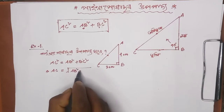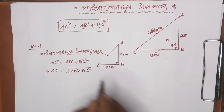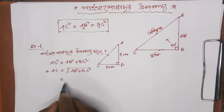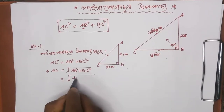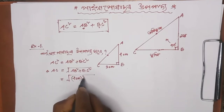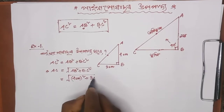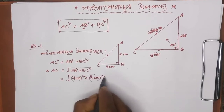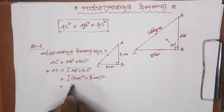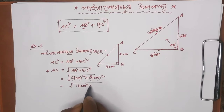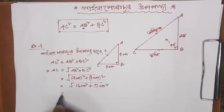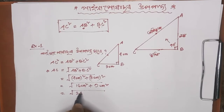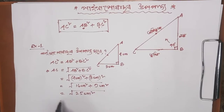AB squared plus BC squared equals AC squared. AB squared means 4 cm squared. BC squared means 3 cm squared. 4 cm squared means 16 cm squared. 3 cm squared means 9 cm squared. Plus gives 25 cm squared.